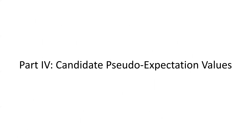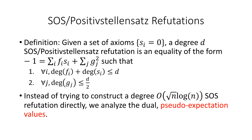Now I'll describe how we prove our sum of squares upper bound. For this, I need to describe what sum of squares refutations are. Given a set of axioms S_i = 0 where each S_i is a polynomial, a degree d sum of squares (or Positivstellensatz) refutation is an equality of the form −1 = Σ_i F_i · S_i + Σ_j G_j², where for all i, the degree of F_i plus the degree of S_i is at most d, and for all j, the degree of G_j is at most d/2. This is a refutation because if all S_i's are 0, then Σ_j G_j² must be non-negative, so this can't possibly equal −1.